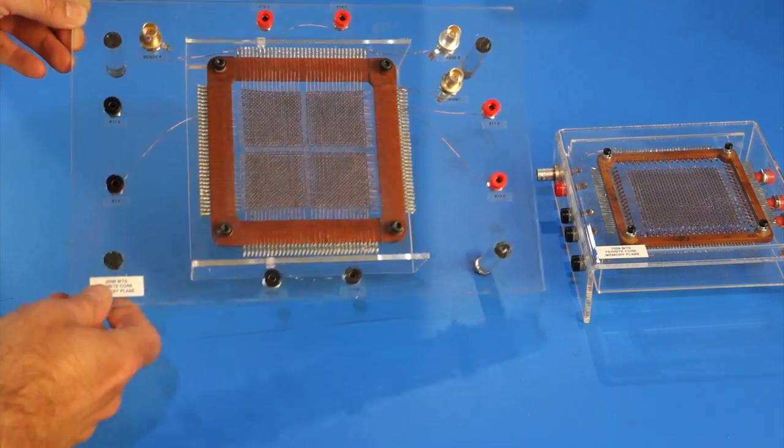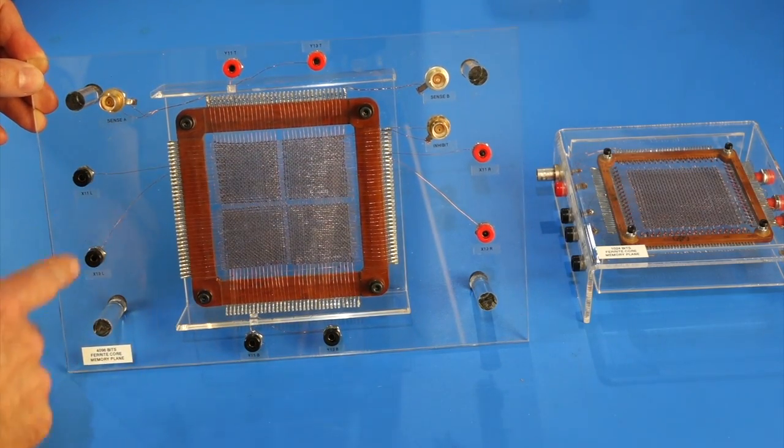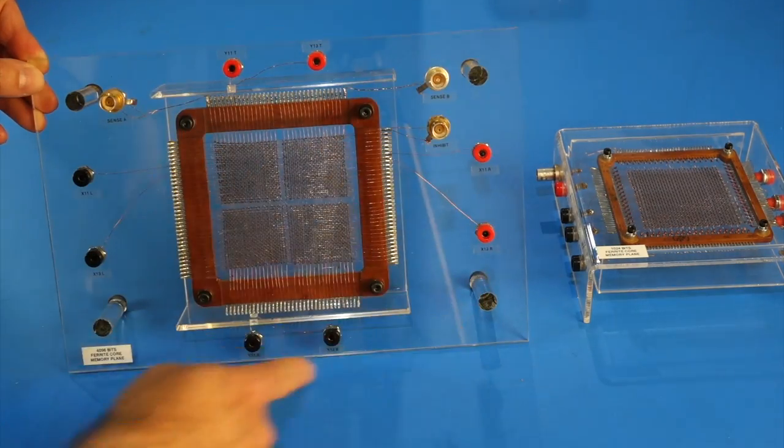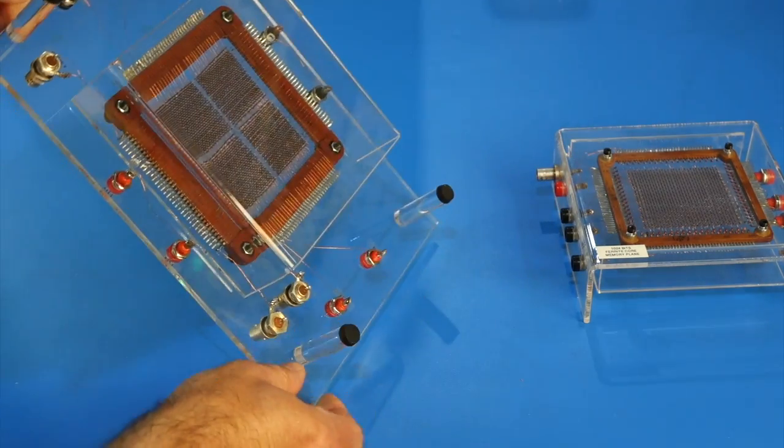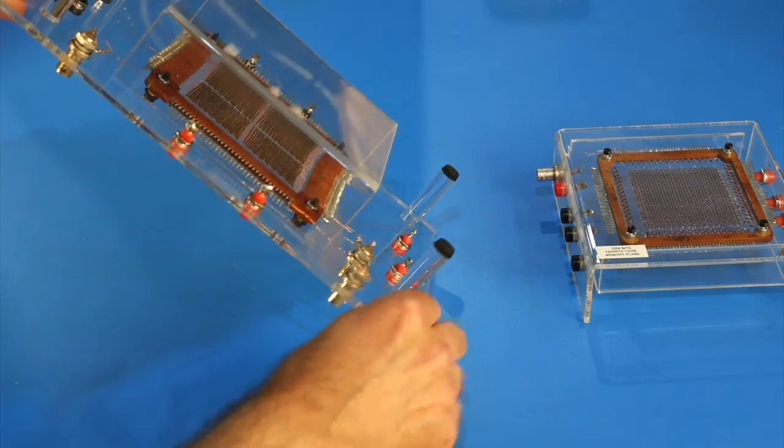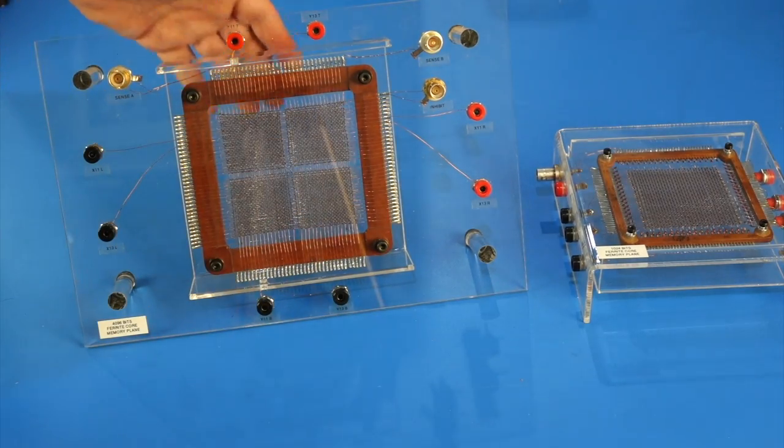So I just took some plexiglass, I think that's from a Container Store, and then added some banana plugs around. I'll show you how they're connected, and put a little protector so you protect the back of the array and don't break it.